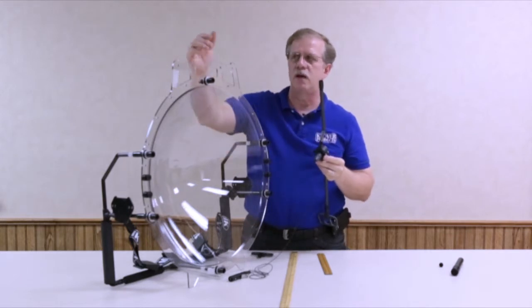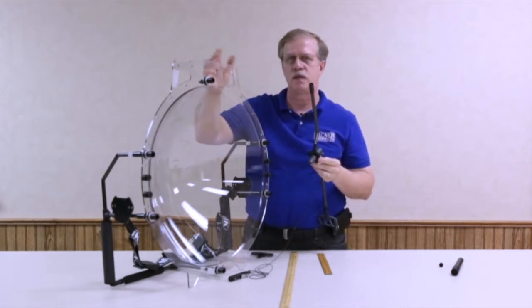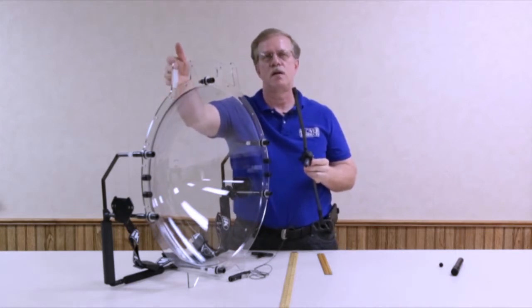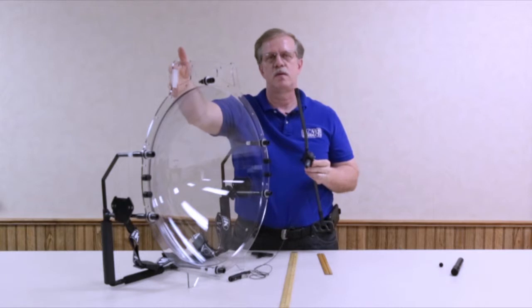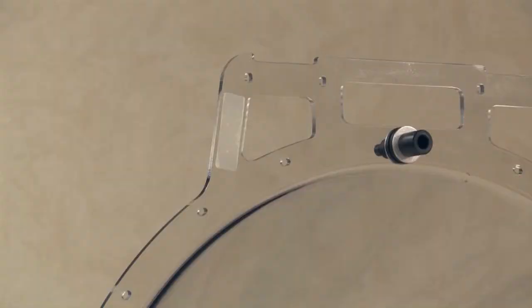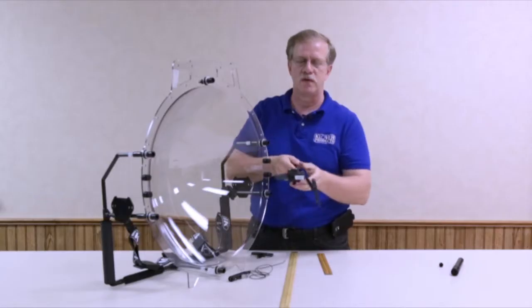Either side of the dish has the same cutout so you can use either side and there's also a label that we put on the handle reminding you of that two and a quarter inch distance. That label is two and a quarter inches long so you can use the label itself as an aid in focusing.